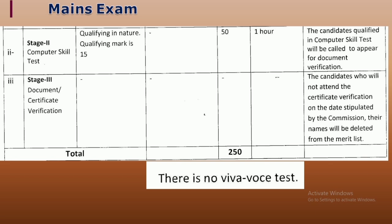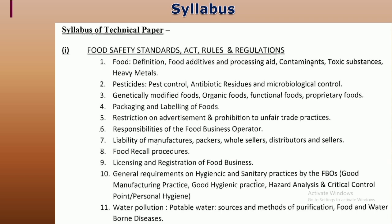With concern to the syllabus for the technical section, the Food Safety and Standards Act (FSSA) includes rules and regulations, with major emphasis on food adulteration, general provisions, pesticides, GM foods, packaging and labeling restrictions, responsibilities of the Food Business Operator (FBO), liability of manufacturers, packers and wholesalers, food recall procedure, licensing and registration, general hygienic practices, and water pollution.